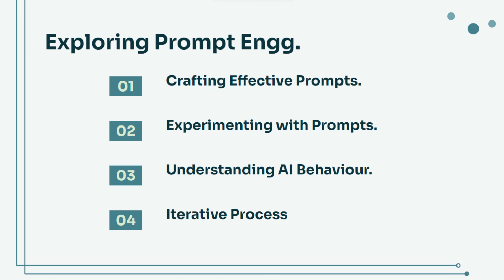Two: experimenting with prompts. Don't be afraid to experiment. Try different phrasings and approaches to see how the AI responds. This is a crucial part of the learning process. Three: understanding AI behavior. Pay attention to how the AI behaves with different prompts. Understanding these patterns will help you refine your approach and get better results.